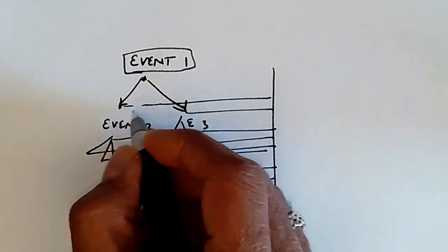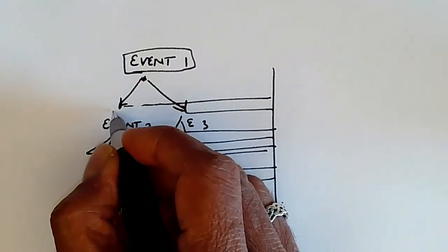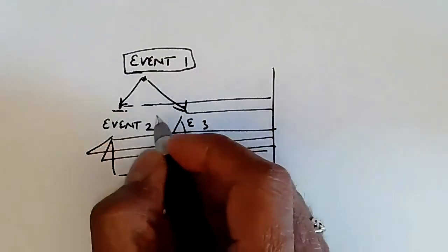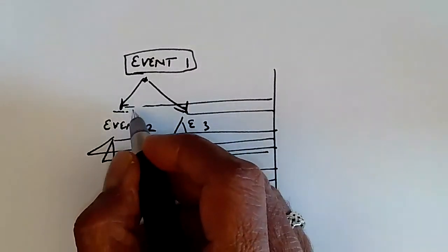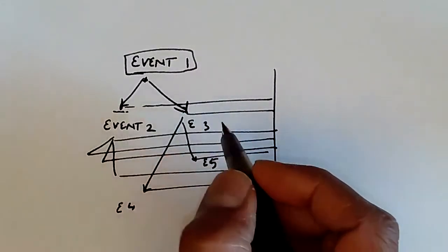It's possible that two might cause some effects, it can cause some side effects which three then depends on. So there may be some global variables, for example, that two updates, that three depends on.